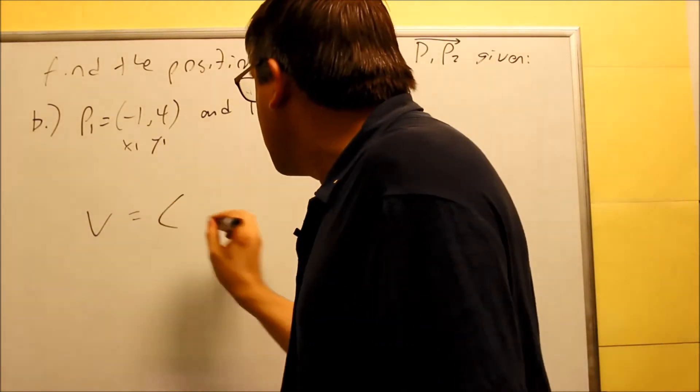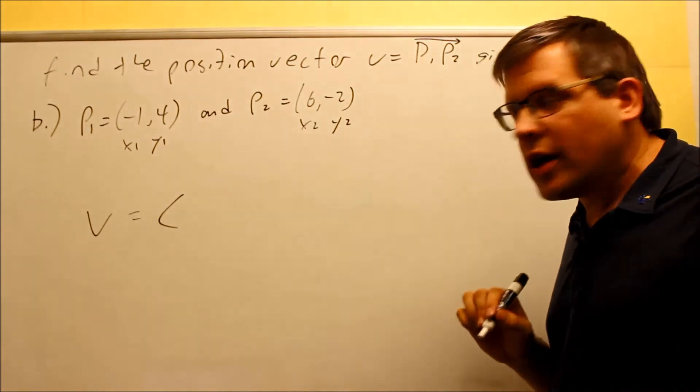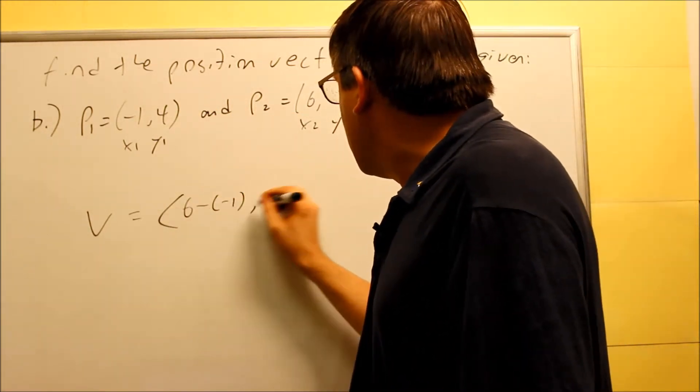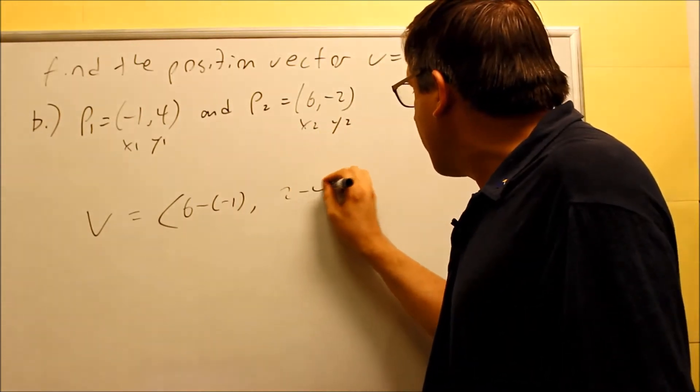So again, the formula you're going to do is just take the difference of the x's, the difference of the y's. So you're going to do X2 minus X1, 6 minus negative 1. And then Y2 minus Y1, negative 2 minus 4.